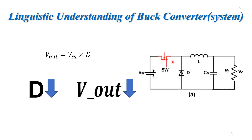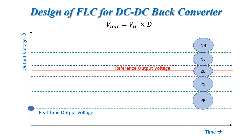if we provide more, the output voltage will increase; if we provide less, the output voltage will decrease. With this understanding, let us now move to the part where we will understand how we design a fuzzy logic controller for a DC-DC buck converter.